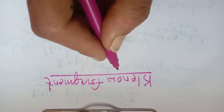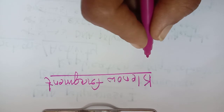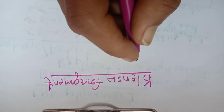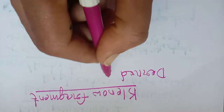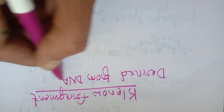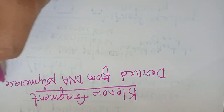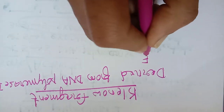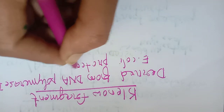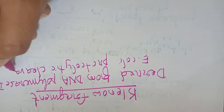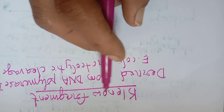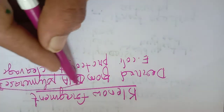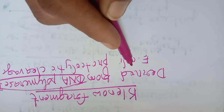The enzyme we are going to discuss today is the Klenow fragment. Klenow fragment is not a complete enzyme — it is an enzyme derived from DNA polymerase I enzyme of E. coli through proteolytic cleavage. Klenow fragment is not naturally occurring; it is obtained by proteolytically cleaving DNA polymerase I.